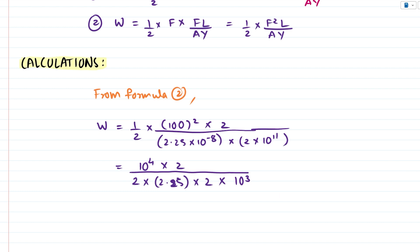Okay so what we can do is we can cancel out 2 in the numerator by 2 in the denominator. Then we can multiply these two terms that is 2.25 × 2 and we can divide 10⁴ by 10³.